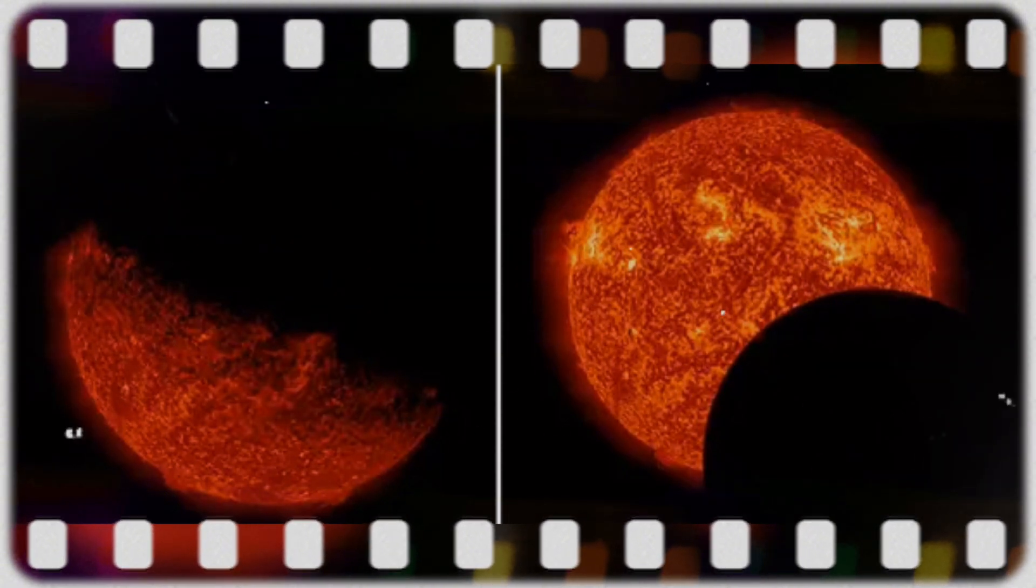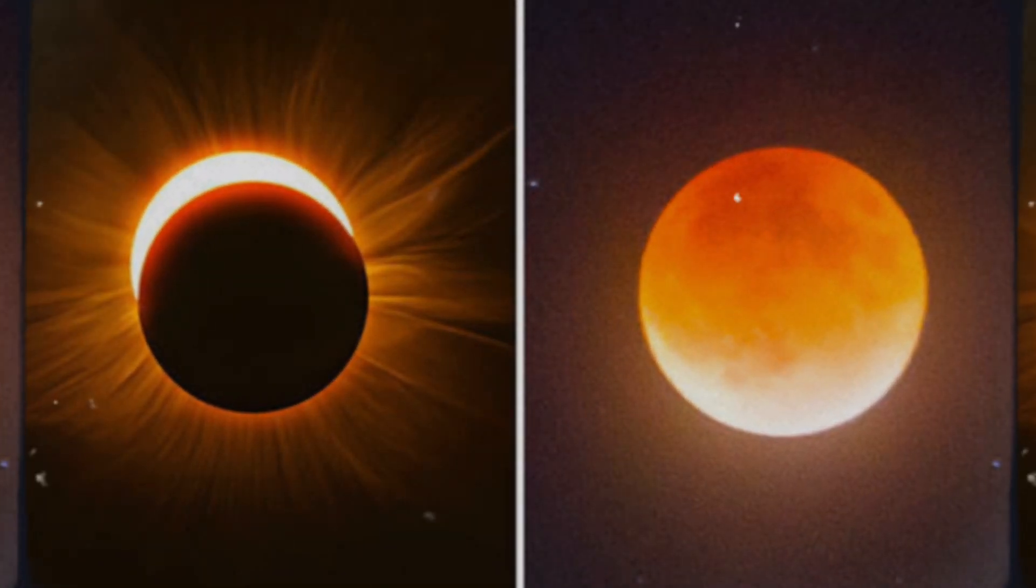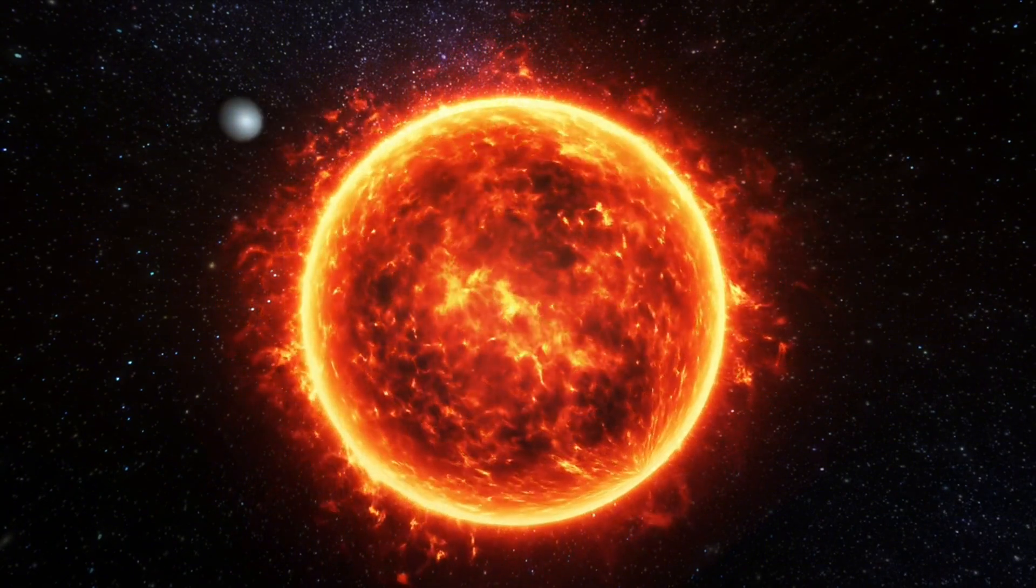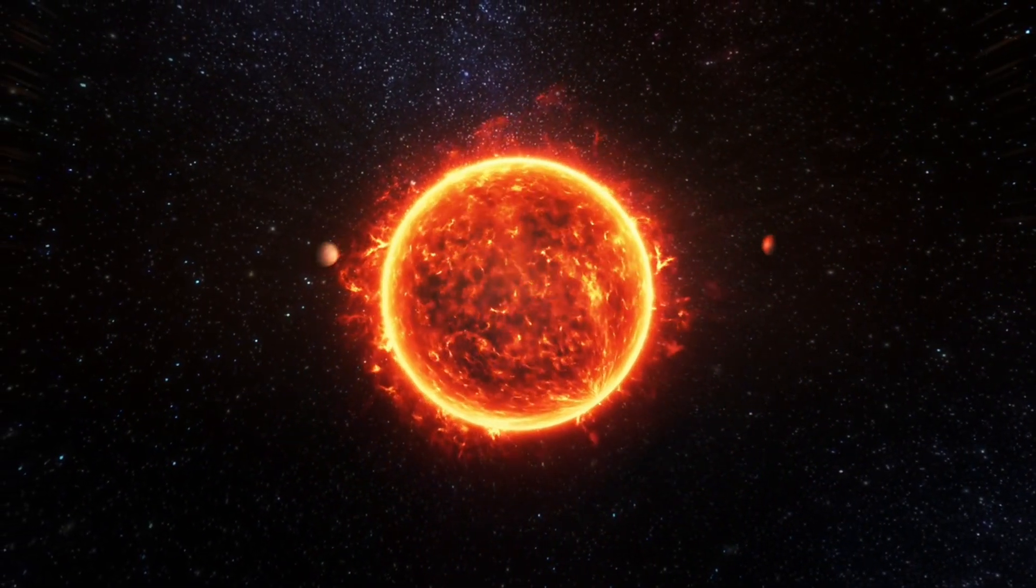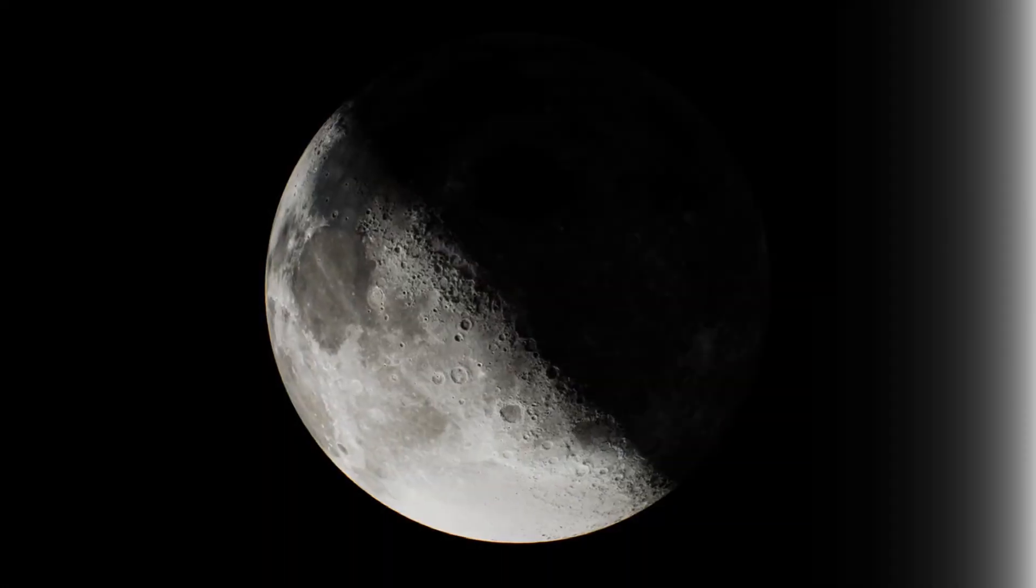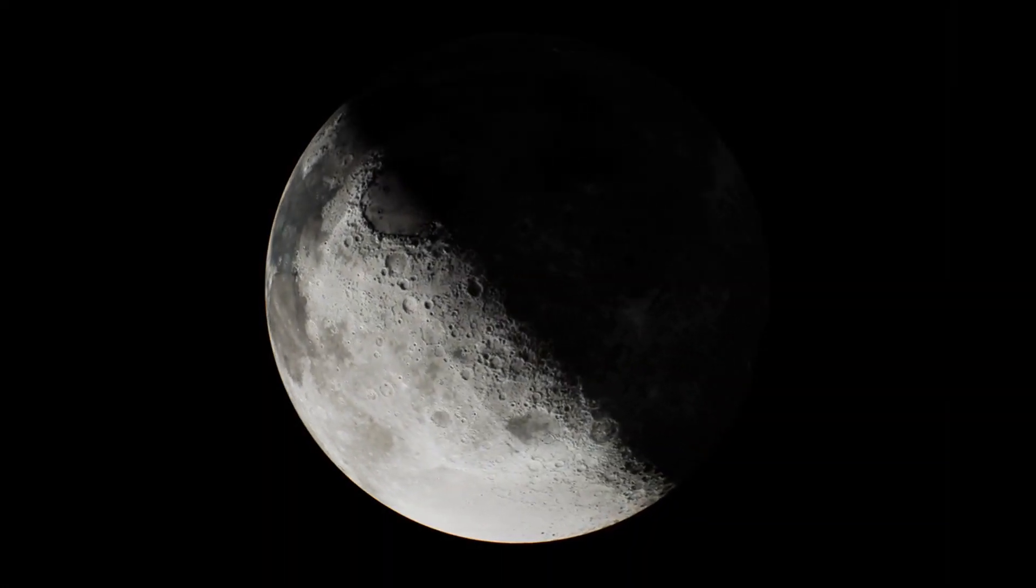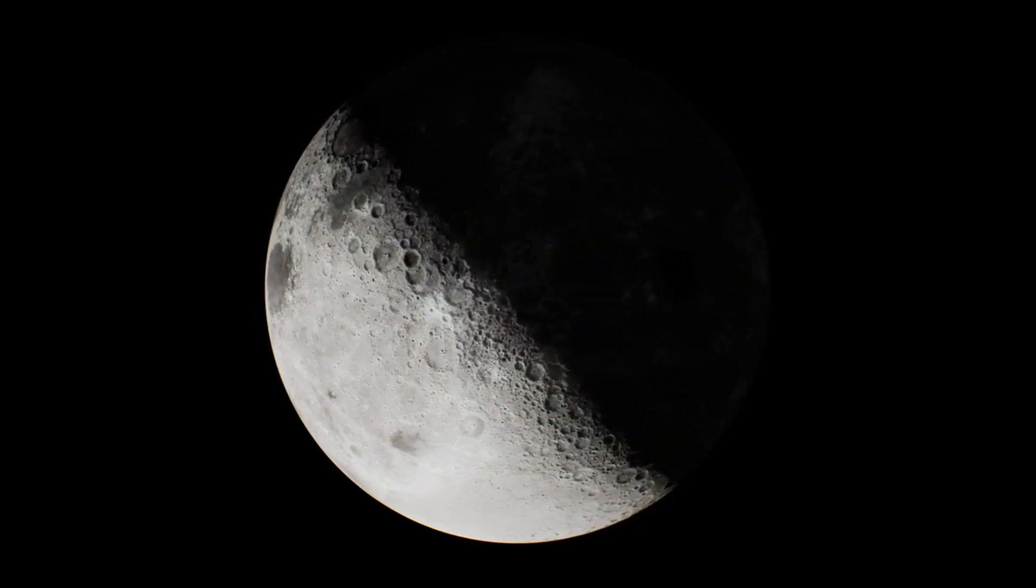One persistent challenge faced by SDO involves eclipses caused by the Earth and Moon. Although these celestial landmarks are a natural part of the orbital path, they temporarily impede SDO's ability to observe the sun. Earth eclipses during equinoxes cast a shadow over the observatory, leading to brief periods of darkness and interrupted data transmission. Similarly, rare lunar transits momentarily obstruct SDO's view of the sun, creating a unique but challenging scenario for solar observation.